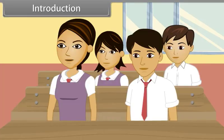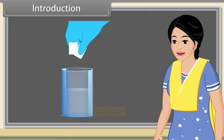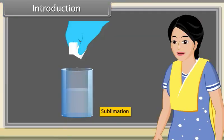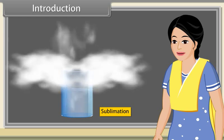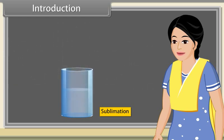Teacher, what is sublimation? Sublimation is the process in which solid directly converts to vapour state without passing through liquid state upon heating.